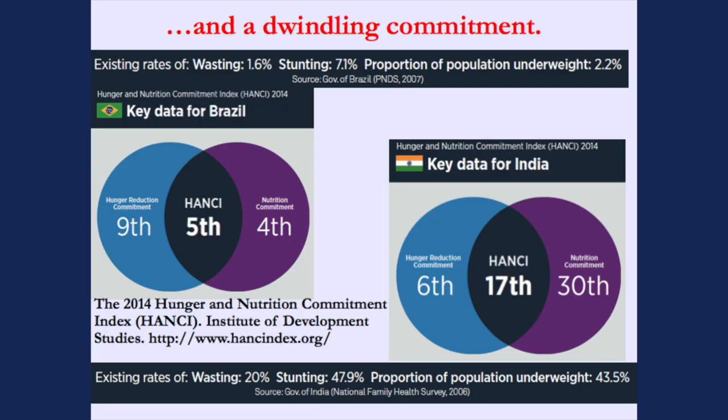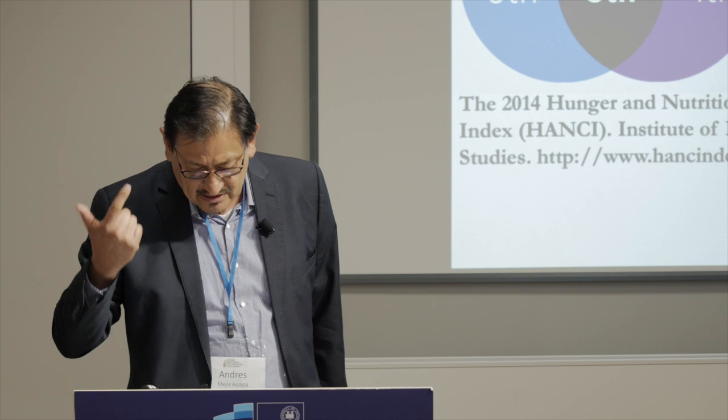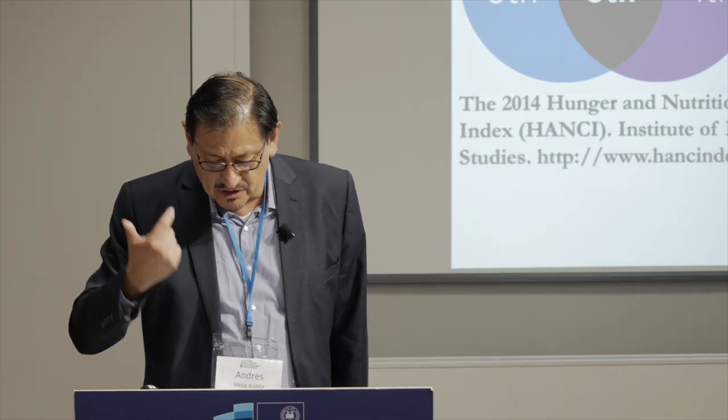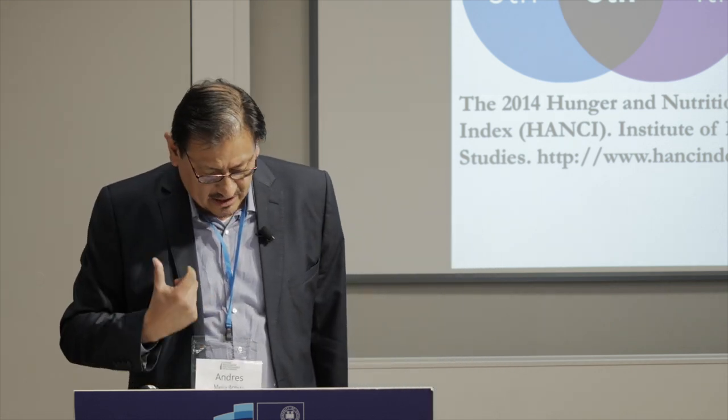I'll refer to work done by my colleagues at IDS — the Hunger and Nutrition Commitment Index (HANCI). They put together indicators looking at a country's commitment to hunger reduction, including government spending in agriculture, access to land, agricultural extension services, constitutional right to food, and women's access to land. There is a separate Nutrition Commitment Index, which looks at drinking water, sanitation, vitamin A, international code for breast milk substitutes, and multisectoral coordination.